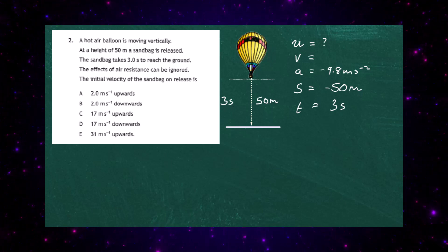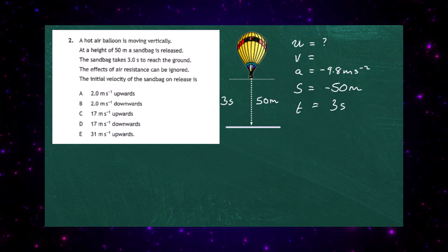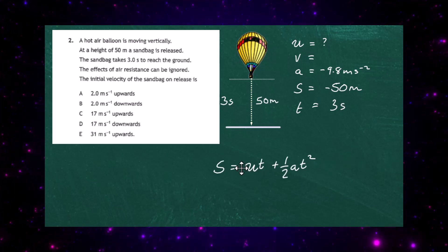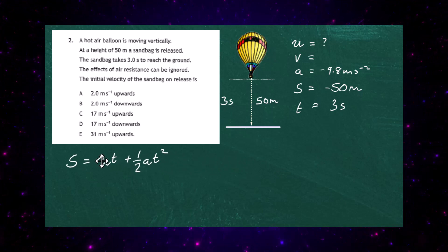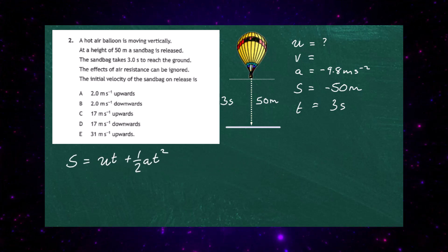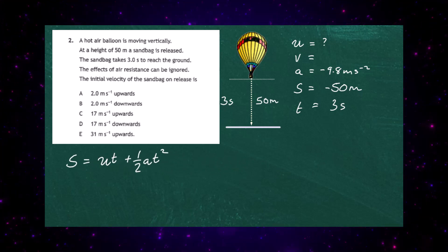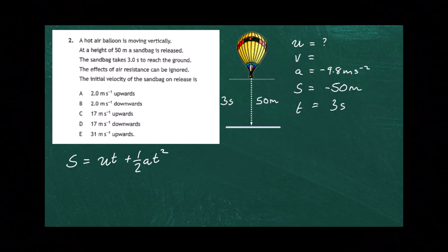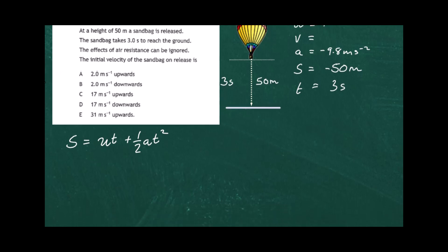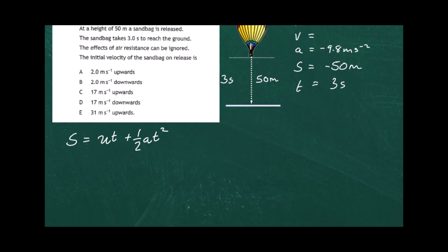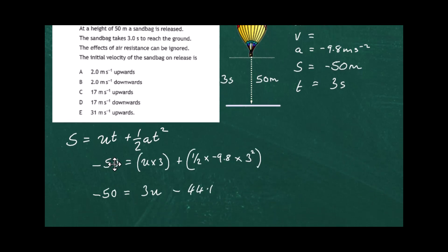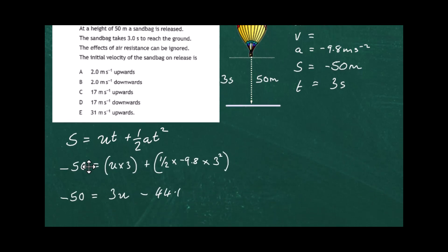We have u, a, s, and t, and we have to solve for u. The equation we use is s equals ut plus one half at squared. Put in the numbers carefully and trust the maths — be careful with arithmetic.